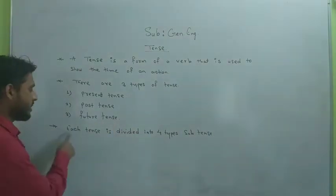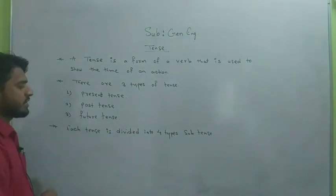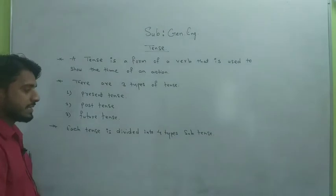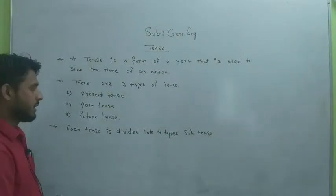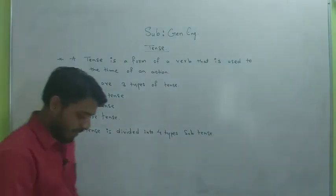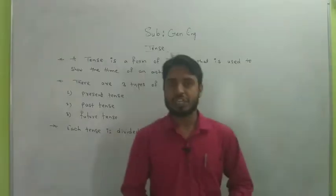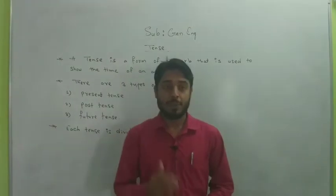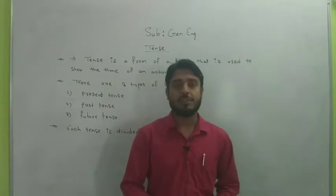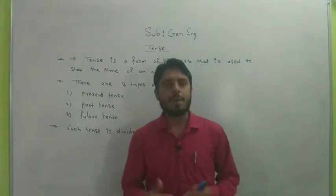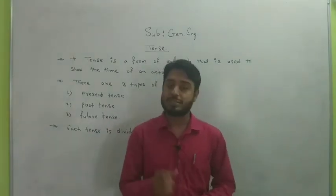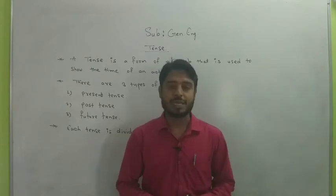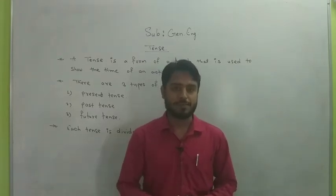Each tense is divided into four sub-types. Present tense contains four types, past tense contains four types, and future tense contains four types.